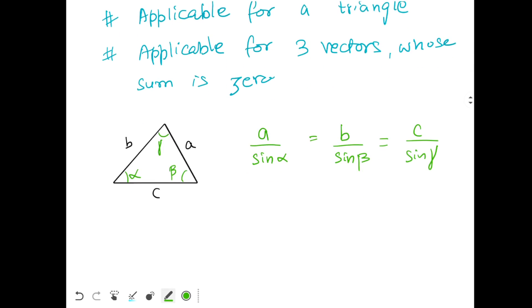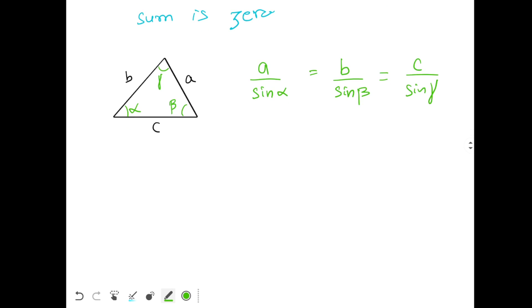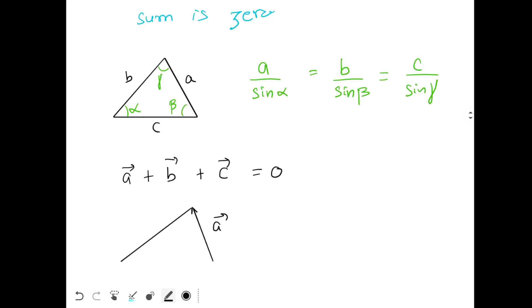Now how do you apply Lamy's theorem in case of vectors? It can be applied in two ways. Let's take three vectors: vector a + vector b + vector c = 0, so the sum of the three vectors is zero. This is vector a. From the head of vector a, I draw vector b, and finally this will be vector c.